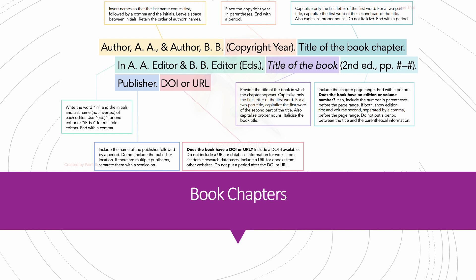The title of the book will be without the edition. If it has one, write the edition after the title. Page numbers will be formatted in parentheses. Include the chapter page range and end with a period. Include the edition number in parentheses before the page range, showing edition first and volume second, separated by a comma. Do not put a period between the title and the parenthetical information.